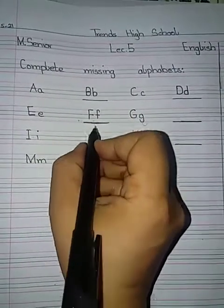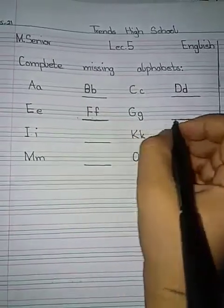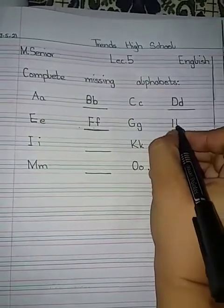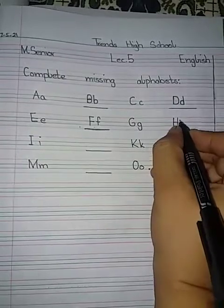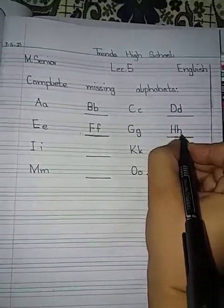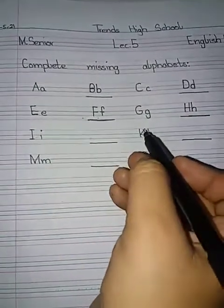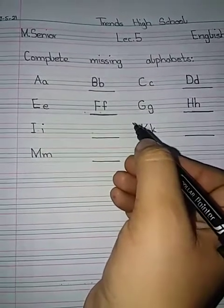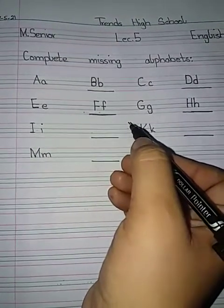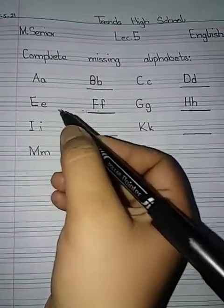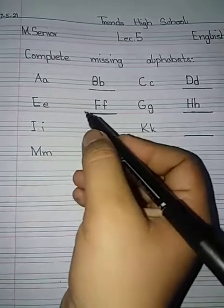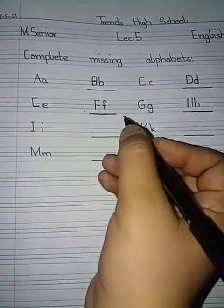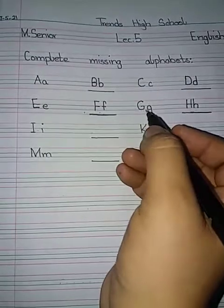Okay? F, G, H. Now see — those children who have done their previous lectures well, memorized them, written them in their copies — they will remember all of this. A, B, C — they will recognize each alphabet, okay, what G looks like, what H looks like.